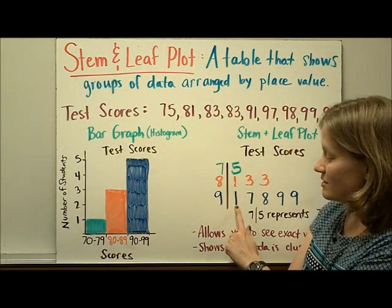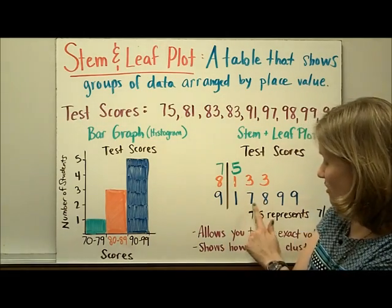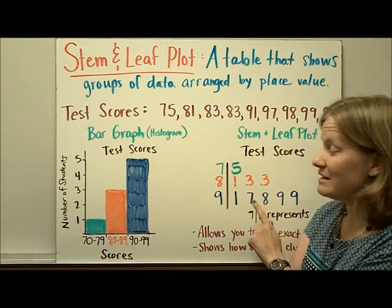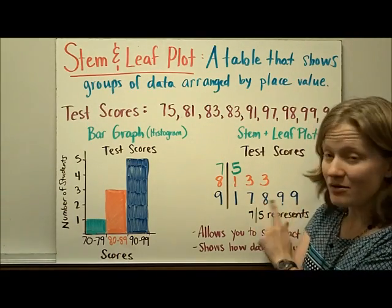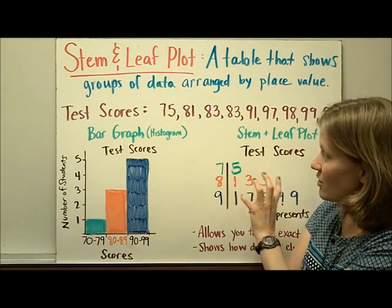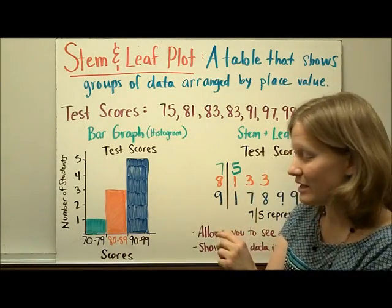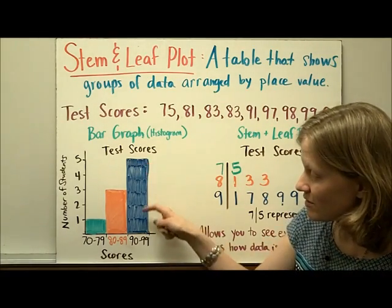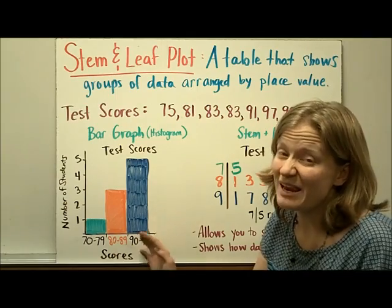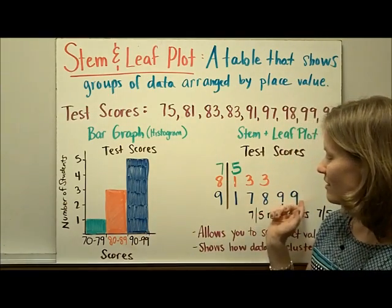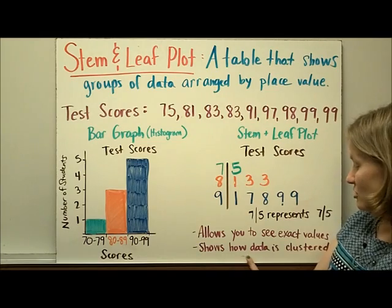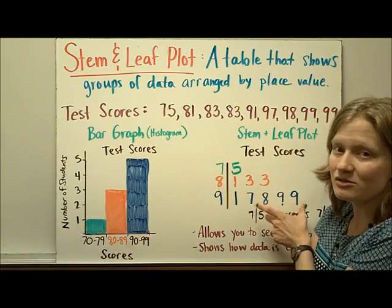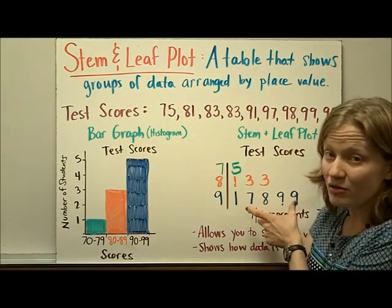For example, notice that we had one score that was in the low 90s, and then four scores that were higher — in the high 90s. These would probably be considered an A+. The stem and leaf plot has two advantages. First, it allows you to see exact values — in the histogram we don't know what those 90s are worth. Second, it allows us to show how data is clustered. We had a big group in the upper 90s, clustered close to 100.